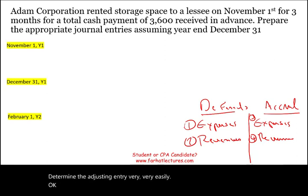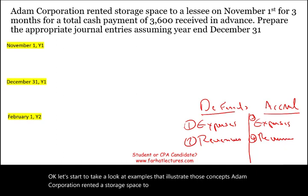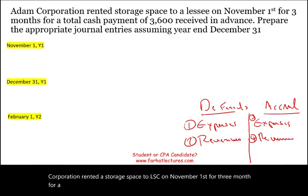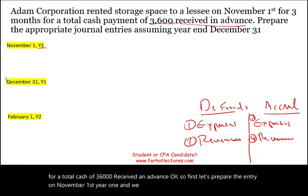Let's start with examples that illustrate those concepts. Adam Corporation rented a storage space to LSC on November 1st for three months for a total cash of $3,600 received in advance. First, let's prepare the entry on November 1st, year one, assuming our year-end is December 31st.